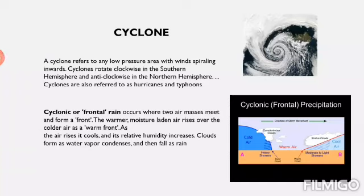Cyclone is another factor that can change the climate. A cyclone refers to any low pressure area with wind spiraling inwards. Cyclones rotate clockwise in the southern hemisphere and anti-clockwise in the northern hemisphere. They are also referred to as hurricanes and typhoons. When air is heated it rises up, leaving low air pressure behind. To fill that space, hot moist air from the surroundings enters the area, and the fast-blowing air starts circulating in a circular motion — this is called a cyclone.